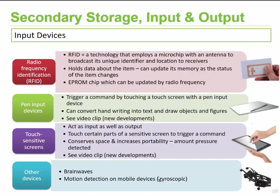The last input device we typically find is brain scanning devices, also known as Brain-Computer Interfaces, or BCI. It's a device placed on your head that recognizes your brain signals as you think of executing commands, and those signals are transferred into commands and executed. Another example on cell phones is gyroscopic capability — as you move your phone, it knows which direction you're tilting it, providing a wide range of input possibilities.